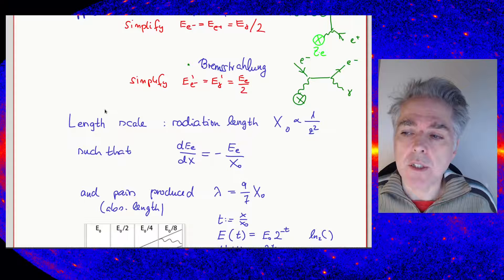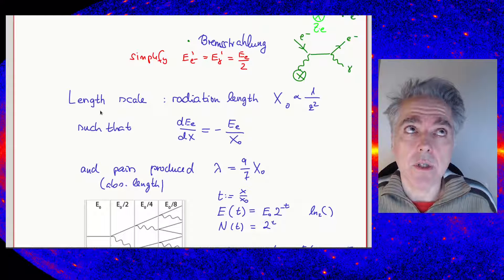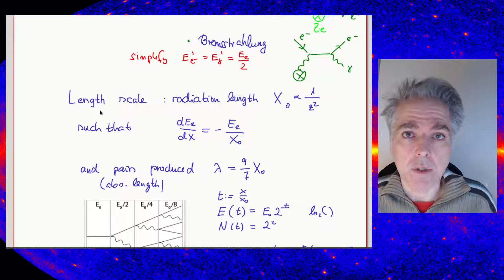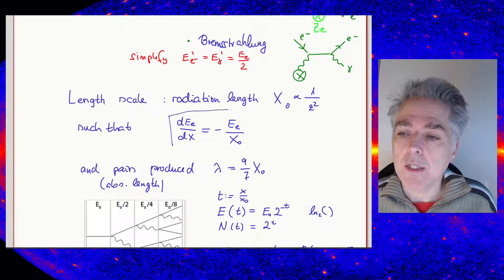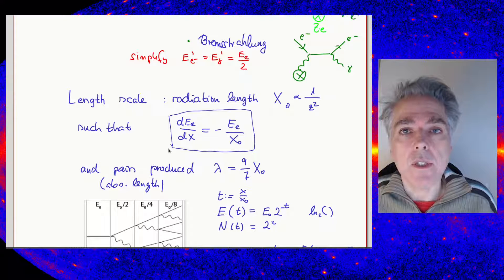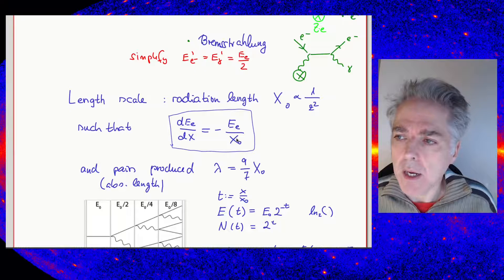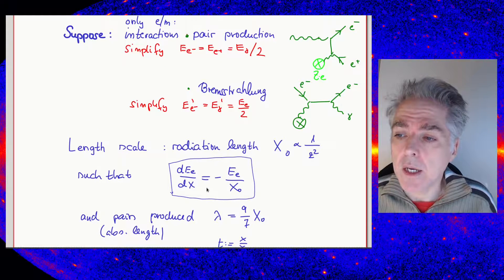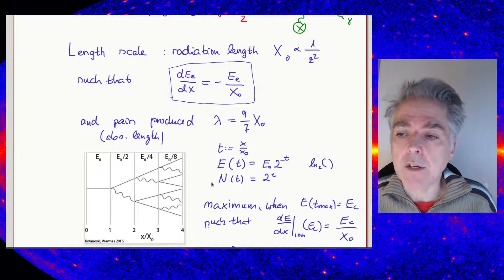The length scale over which particles interact in the medium is characterized for Bremsstrahlung by the radiation length x₀, which is proportional to 1/Z² of the medium. The radiation length characterizes the energy loss over distance. For pair production, a photon produces an electron-positron pair in the field of the nucleus. The distance over which a photon is absorbed relates to the radiation length — more accurately, nine-sevenths of a radiation length.